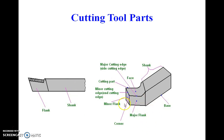The next two parts are known as the major flank and the minor flank, which are the lower portions of the face of the cutting tool. These are provided to avoid the rubbing action between the tool and the workpiece. The corner is generally known as the nose, which is the intersection of the minor cutting edge and the side cutting edge.